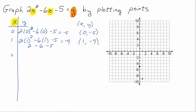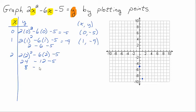Let's try two. Two times two squared minus six times two minus five. Two squared is four, times two is eight. Take away twelve, take away five. So that's negative four, take away five — that's negative nine again. Interesting. So I have the point two, negative nine — right here.